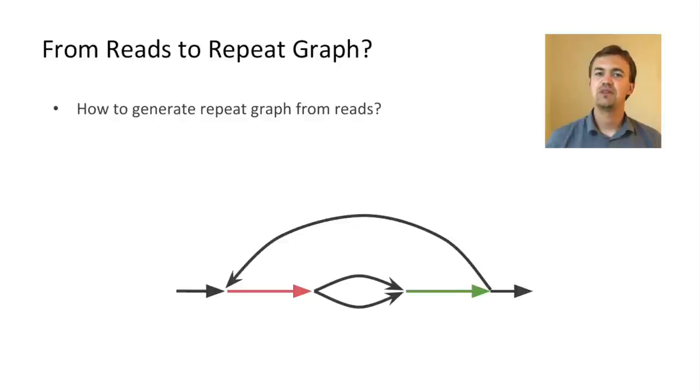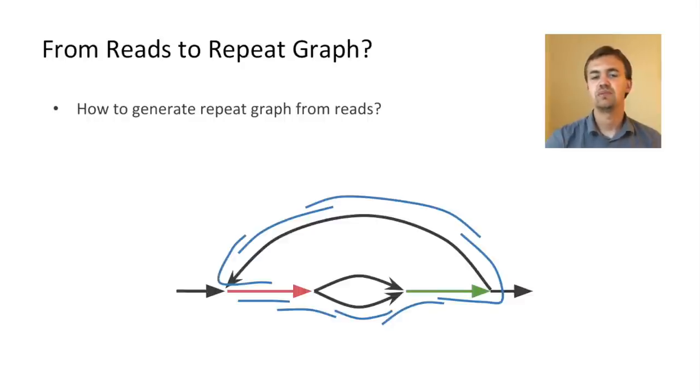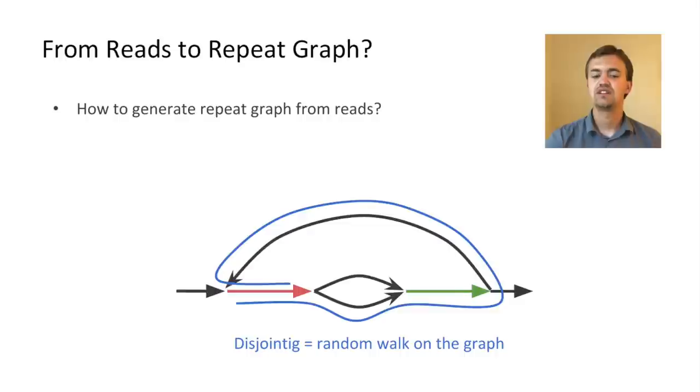Now the question is, how can we apply this for read assembly? How can we generate repeat graphs from reads? First, let's assume that we somehow magically have this perfect repeat graph that corresponds to the given genome. The reads actually will be subpaths on this graph because the genome goes through the graph and a read is a substring of the genome. And what we can do, we can take one read and switch to any other read that shares a sufficient overlap with the current one, and we can continue this process. This will basically correspond to a walk on the graph, and perhaps we should stop when we hit a sequence that already has been assembled. This will correspond to something that we call disjointigs. It's essentially a random walk on the repeat graph.